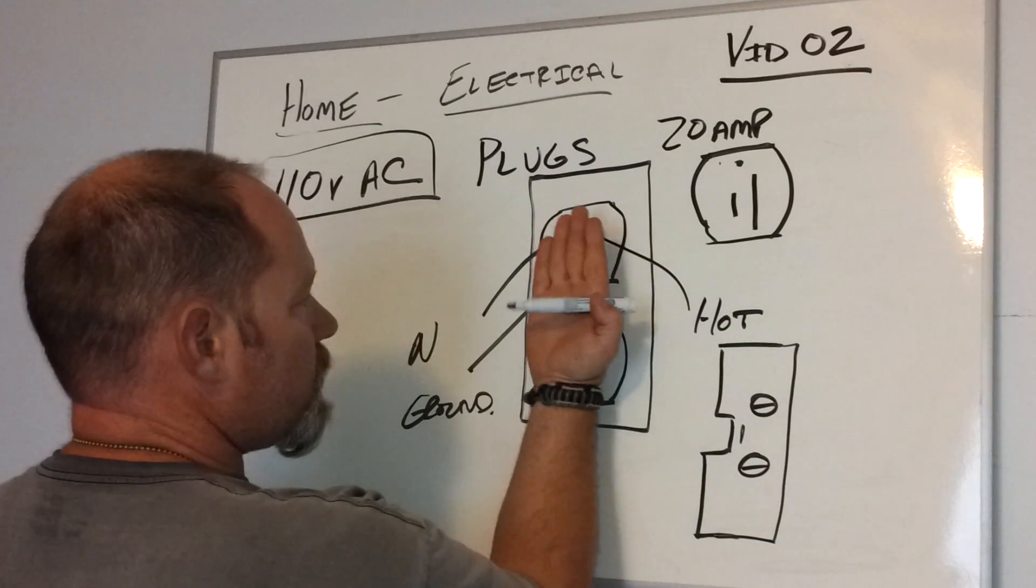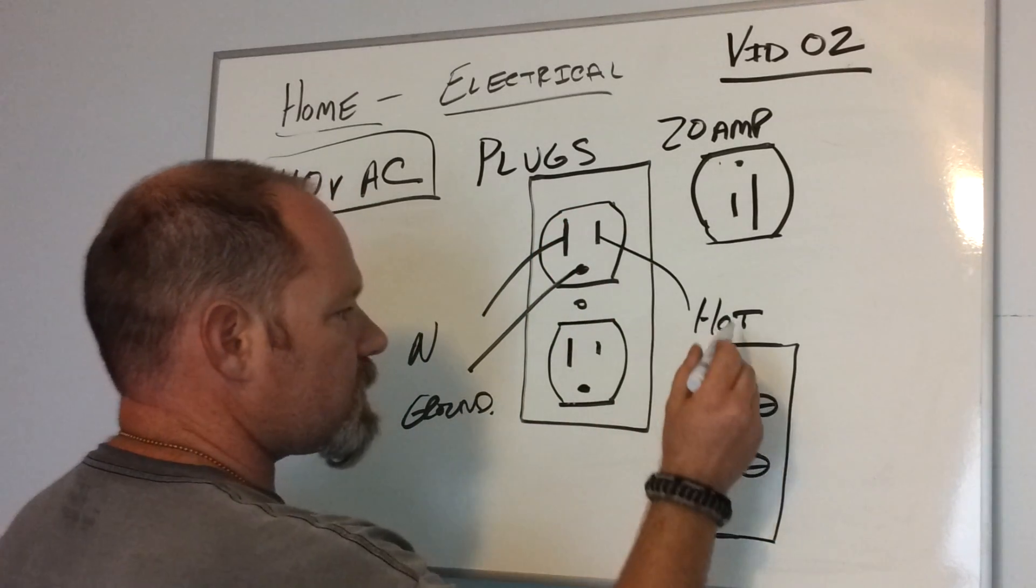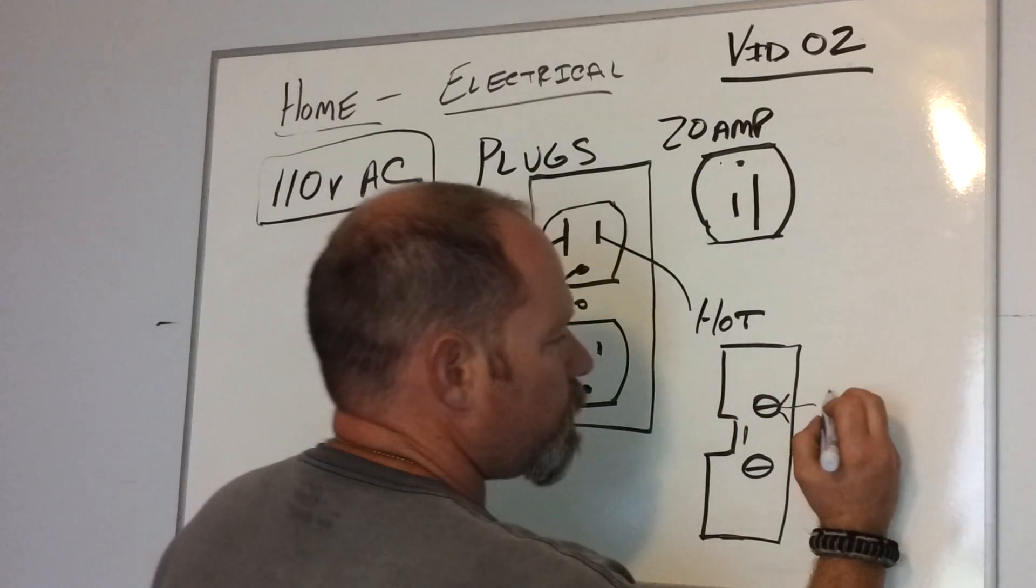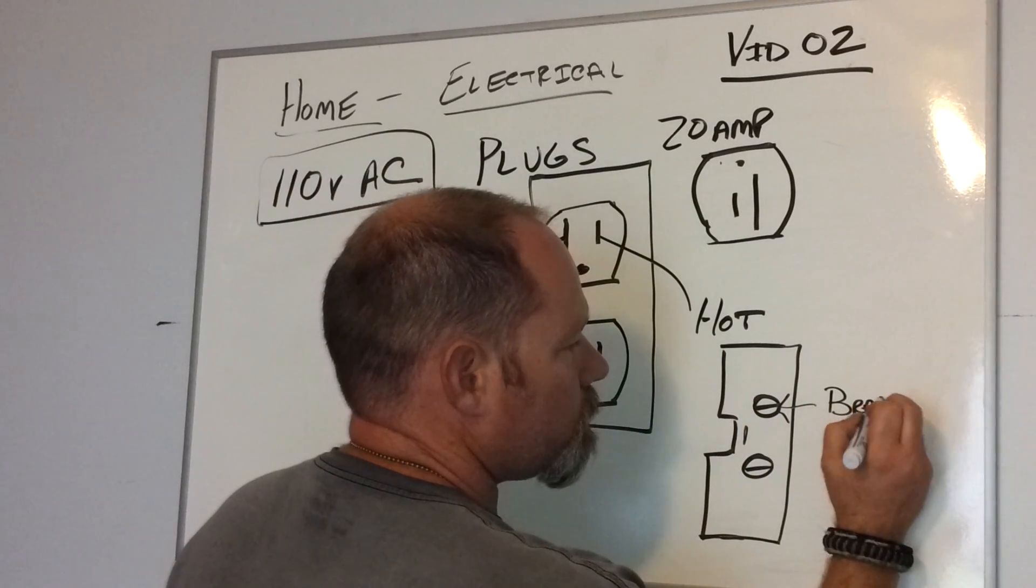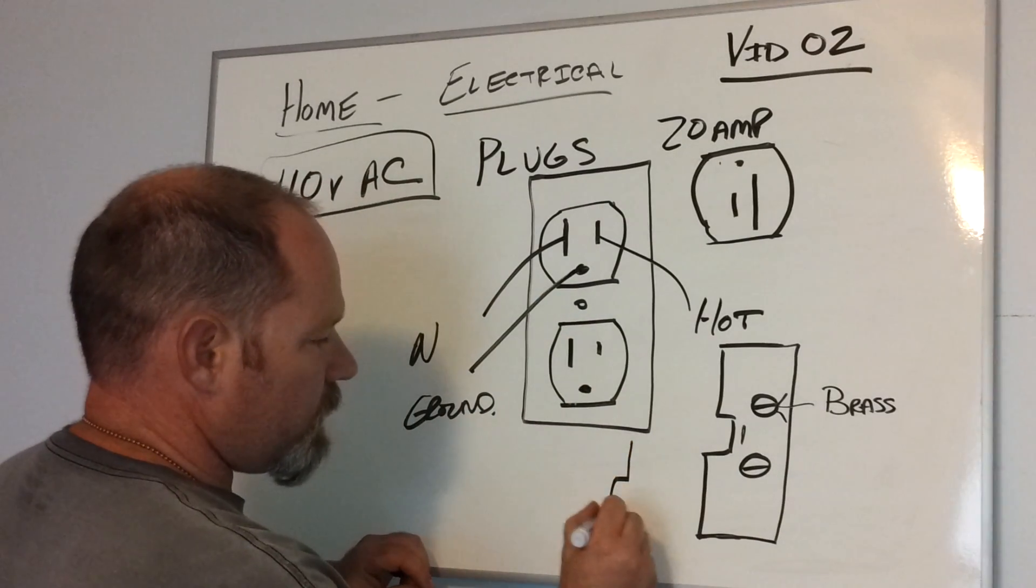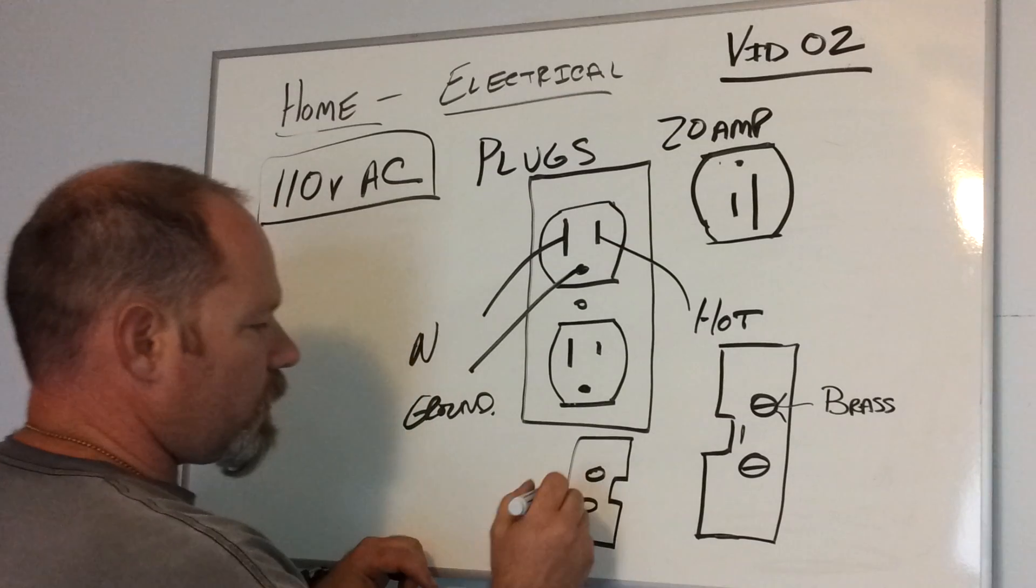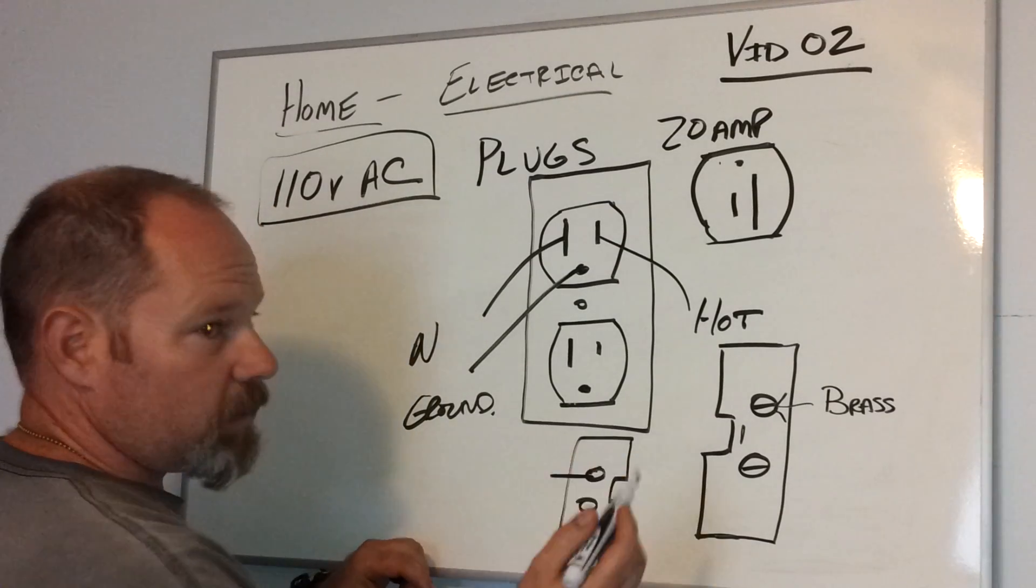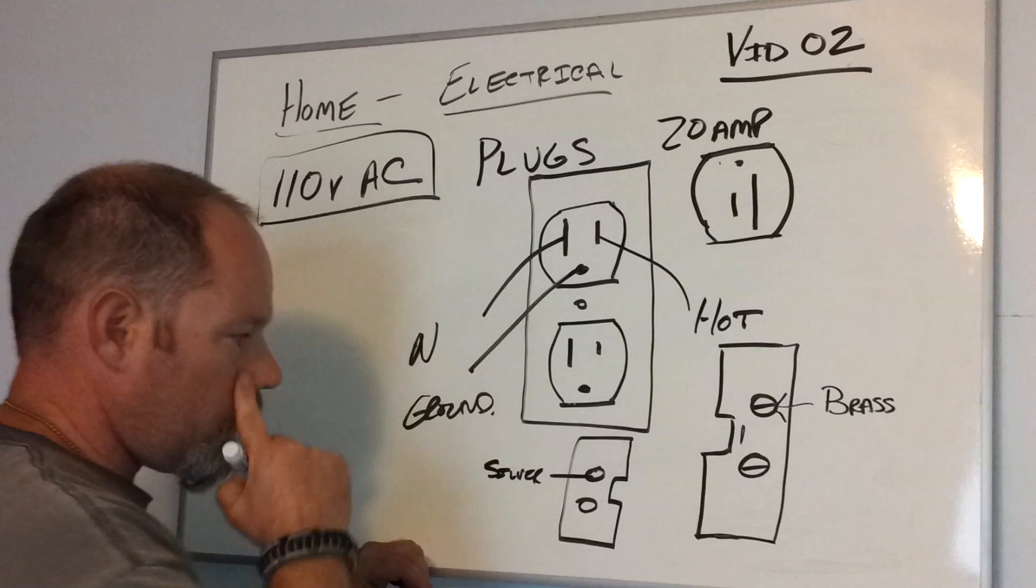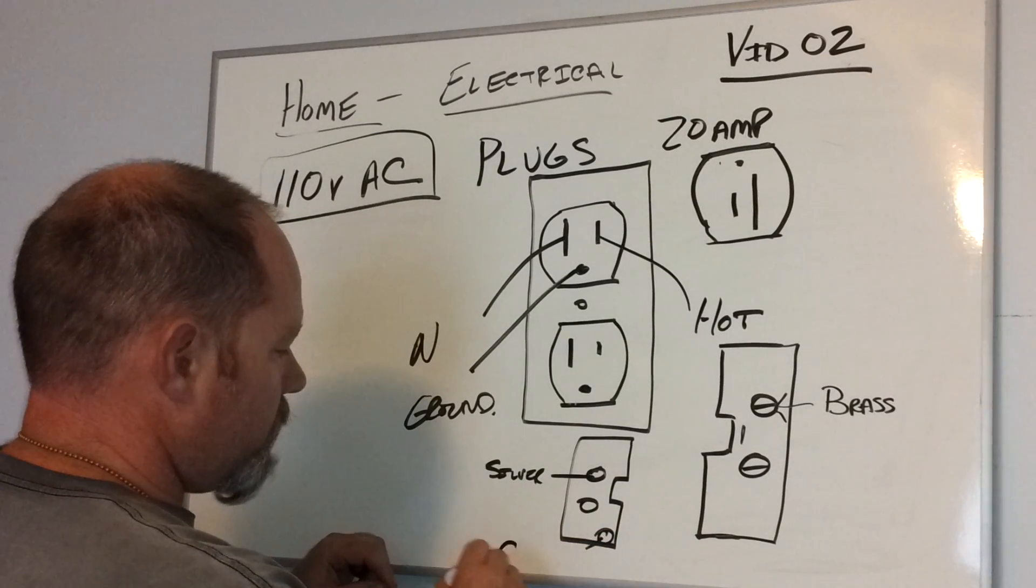By looking at this, we've taken this plug and turned it sideways. Now, we know that this is the hot side, so there's a color coding on these—and it's brass. If you flipped it the other way, you see the two screws. They're going to be silver or nickel. Your ground terminal is typically going to be down here, and it's going to be green.